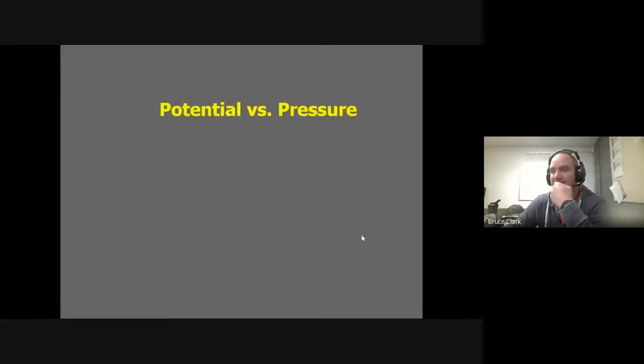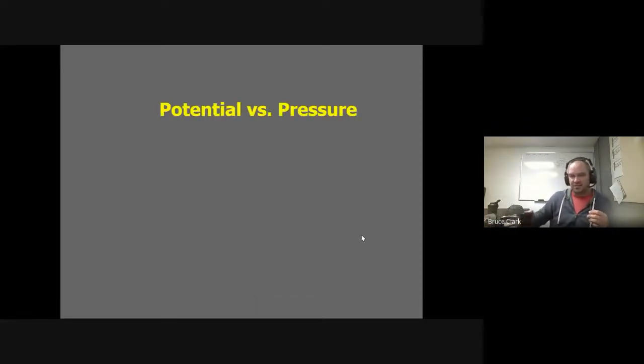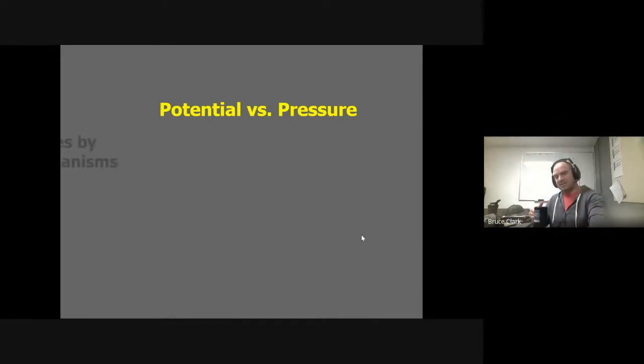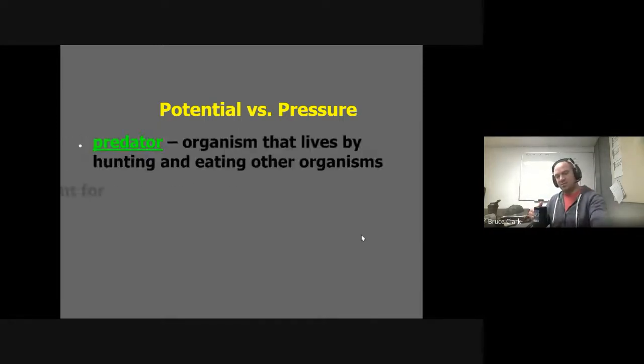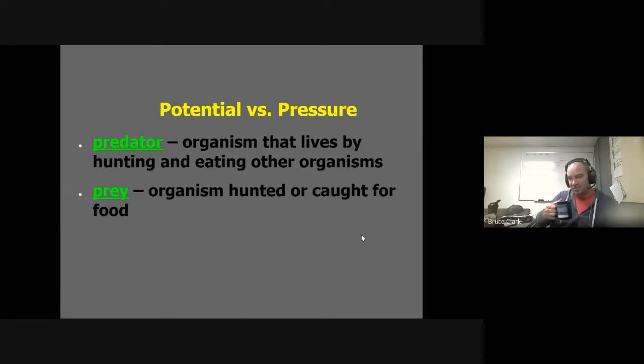Today we are in our next part of our ecology notes. It's a short bit today — kind of our last little population graph that we're going to look at. Today's notes are predator versus prey populations.